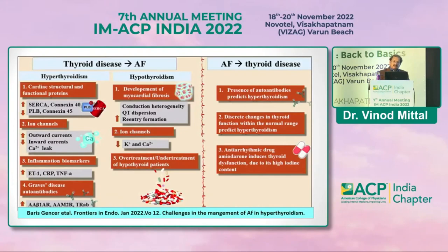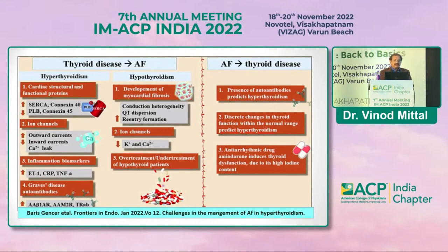When patients with AF are given amiodarone, prolonged use can lead to thyroid dysfunction which we may miss. Therefore, when a patient has AF, we should check for autoantibodies and other autoimmune disorders. If one condition is present, try to find the other.